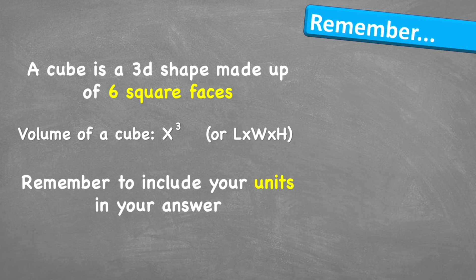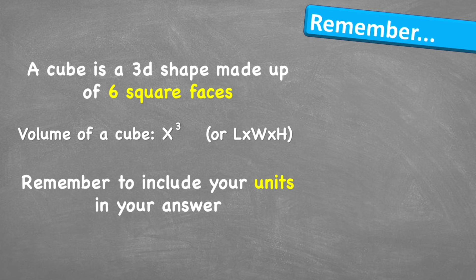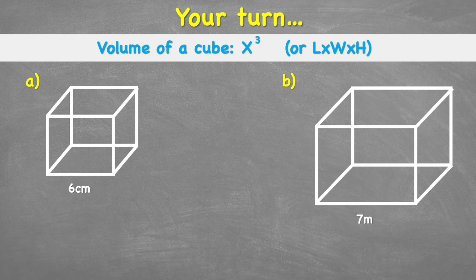Let's look at what to remember. A cube is a 3D shape made of six square faces. The volume of a cube is equal to X cubed, or one length cubed. Or we can use the expression length times width times height. Remember to always include your units in your answers. Now your turn — have a go at finding the volume of these two cubes. Good luck.